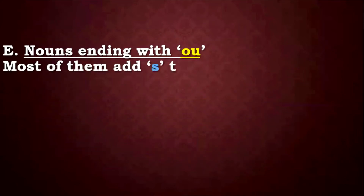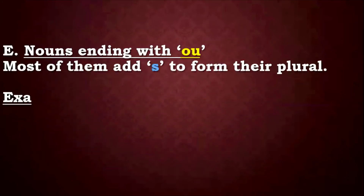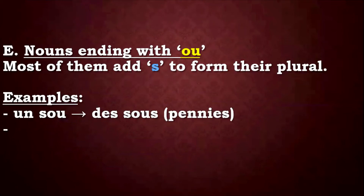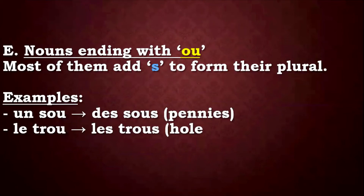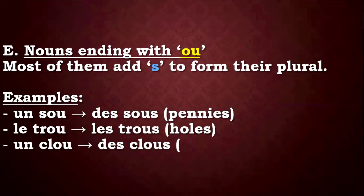Let's look at the next group. These nouns end with -OU. Anytime you see a noun ending with -OU and you want the plural form, most of them use S. For example: un sou, des sous — pennies. Le trou, les trous — holes. Un clou, des clous — nails.